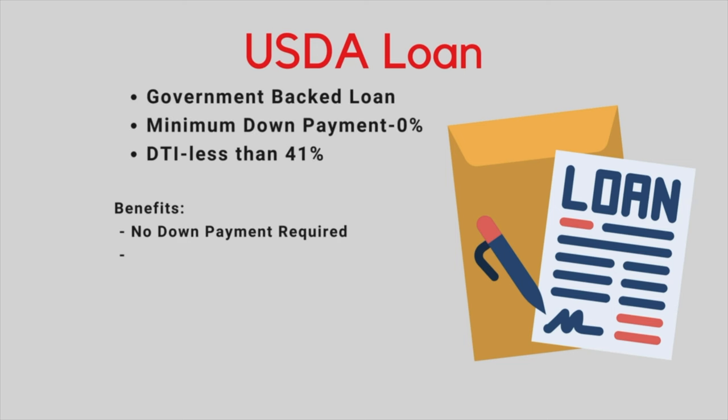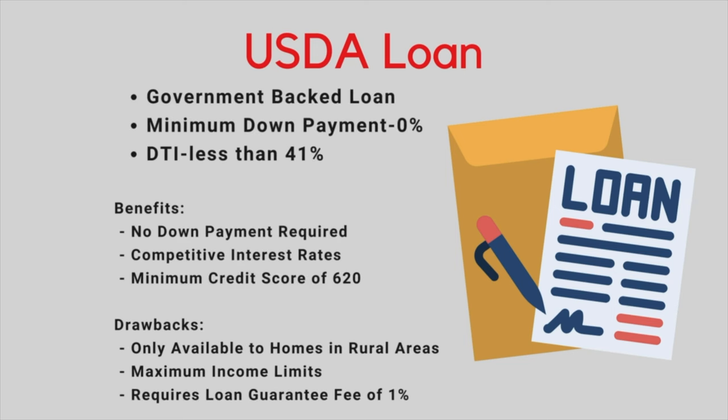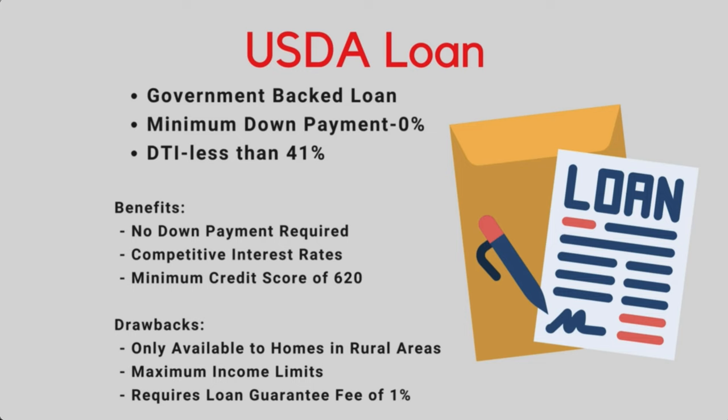The final government loan program we'll discuss is the USDA loan. This loan program is backed by the Department of Agriculture and is designed to help individuals purchase property in rural areas. To qualify, the home must be located in areas based on the USDA eligibility map and the borrower must be at or below the maximum income limits. The benefits are that it requires no down payment and has competitive interest rates, typically lower than conventional loans. A few cons are that it's limited to qualifying areas, has a maximum income restriction based on the location of the home, and the USDA loans have an upfront loan guarantee fee, which in 2024 was 1% of the loan and a 0.35% annual fee.